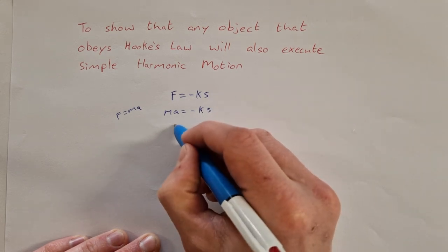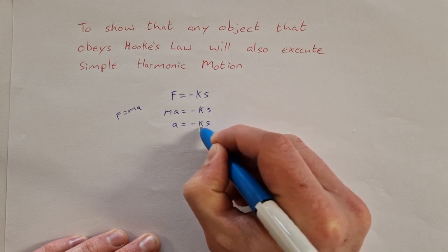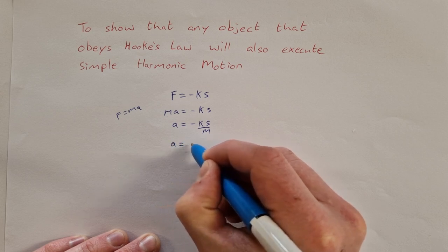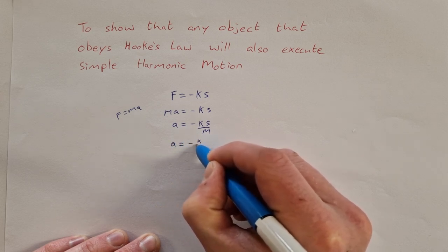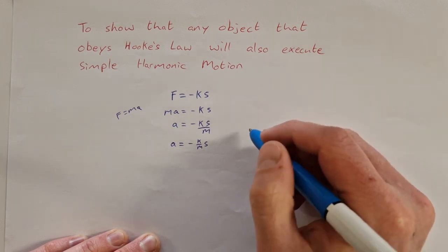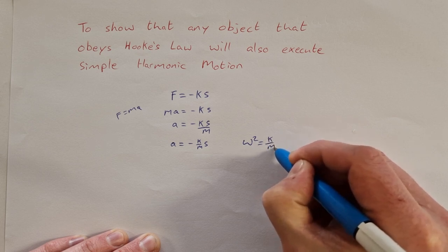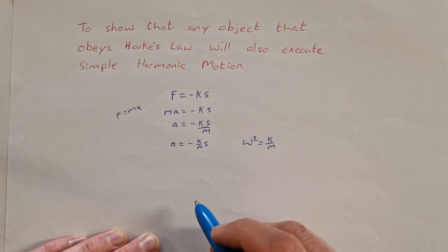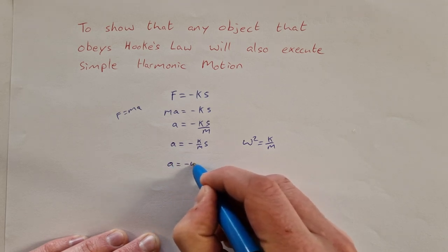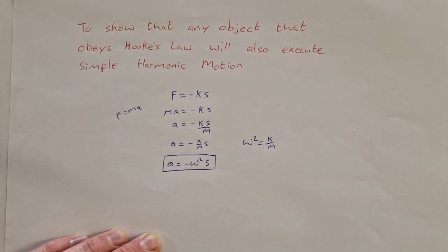Dividing across by m gives us a equals minus k s over m, or rearranging, a equals minus k over m times s. Now, since omega squared equals k over m, I can replace k over m with omega squared to get a equals minus omega squared times s, which is our formula for simple harmonic motion.